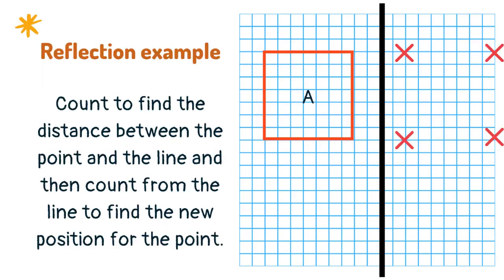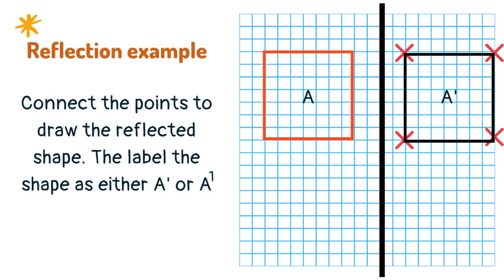The reflected points must be on the same horizontal line as the original points and the same distance from the line. Then you must connect up the points to draw the reflected shape. Label the shape as either A' or A1.